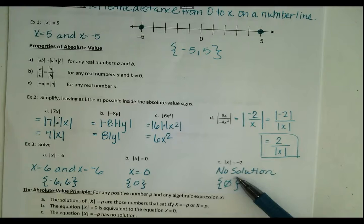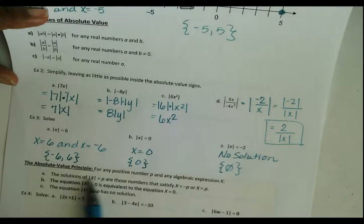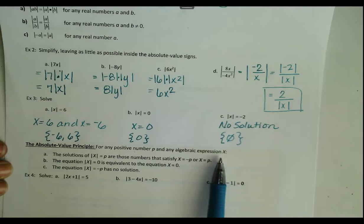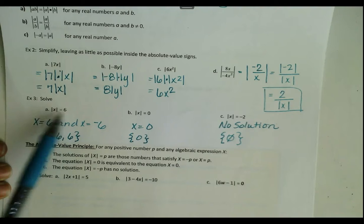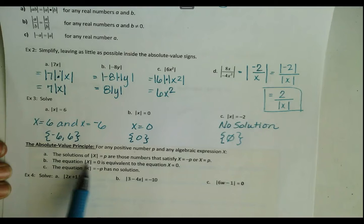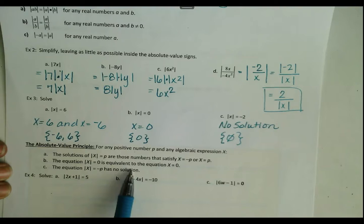So that's what we've already covered. The absolute value principle states: for any positive number P and any algebraic expression X, the solutions of |X| = P are those numbers that satisfy X = −P or X = P. Anytime your absolute value equation equals 0, it's equivalent to setting the expression equal to 0. And anytime the absolute value equals a negative number, there is no solution.